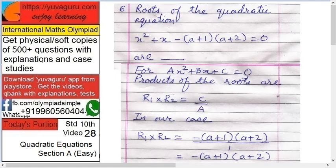Next, roots of the quadratic equation x square plus x minus (a plus 1) into (a plus 2) equals to 0. This is of the form ax square plus bx plus c.